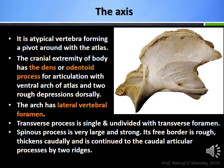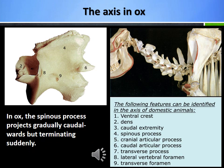The axis is a typical vertebra forming a pivot around which the atlas rotates. The cranial extremity of the body has the dens or odontoid process for articulation with the ventral arch of the atlas and two rough depressions dorsally. The arch has a lateral vertebral foramen. The transverse process is single and undivided with a transverse foramen. The spinous process is very large and strong, its free border is rough, thickens caudally and is continued to the caudal articular processes by two ridges. In ox, the spinous process projects gradually caudally but terminating suddenly.